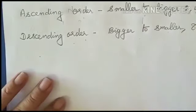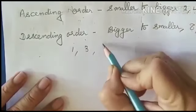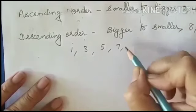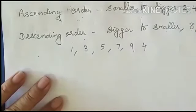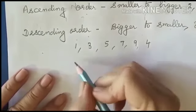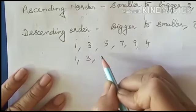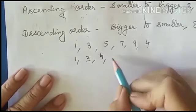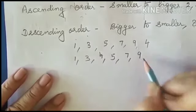Now, suppose I have written some numbers: 1, 3, 5, 7, 9, 4. Then which is the smallest number? Can you tell me? It is 1, then 3, 4, 5, 7, and 9.